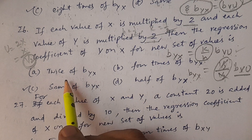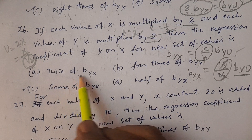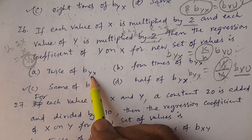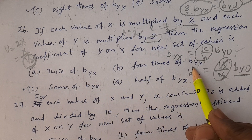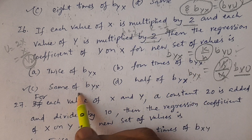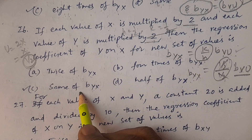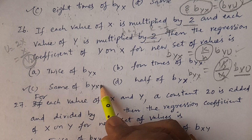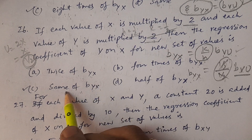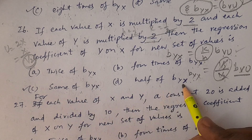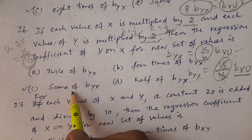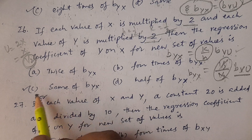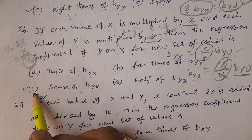You should choose from options: twice of byx — no. Four times of byx — no. Same of byx — yes. This is the answer, option C. Half of byx — no. The answer is same of byx, option C.